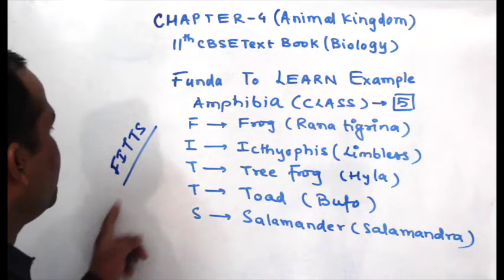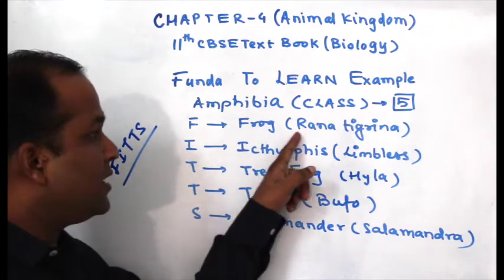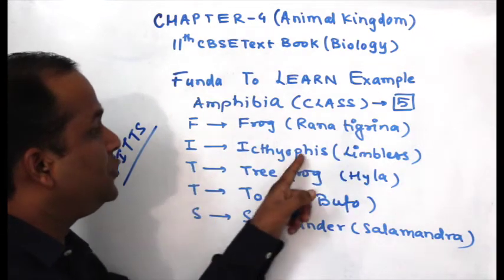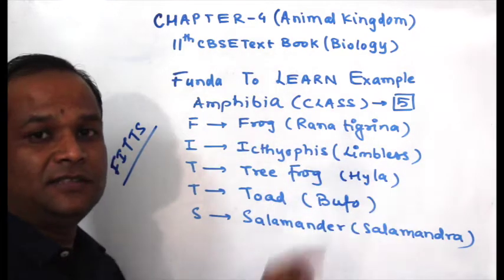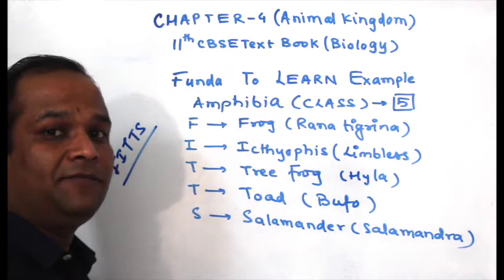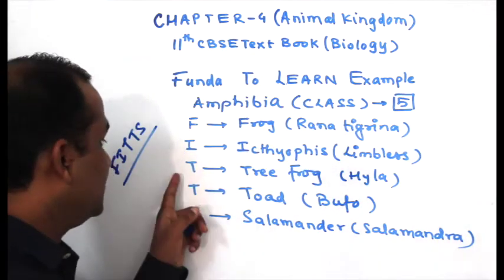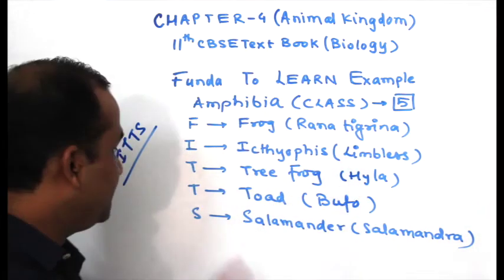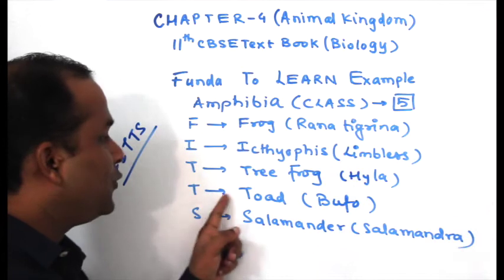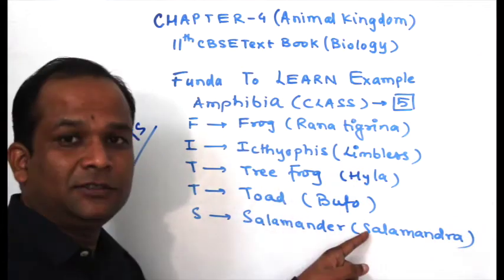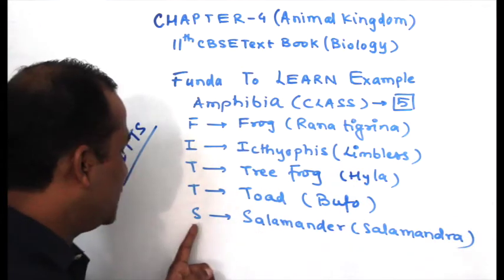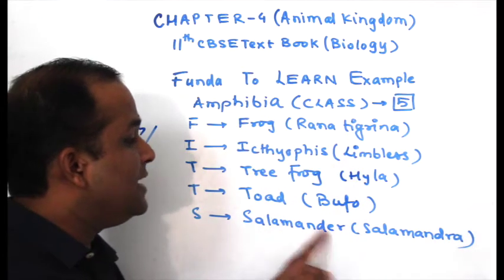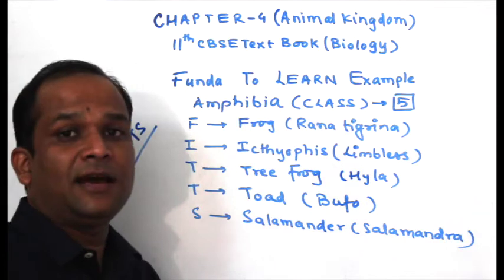F for Frog, that is Rana tilina. I for Ichthyophis, that is a limbless amphibian. T for Tree Frog, that is Hila. T for Toad, that is Bufo. And S for Salamander, that is Salamandra. So 5 examples are given.